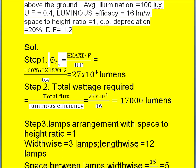First, calculate the total flux: illumination into area of the room into depreciation factor divided by utilization factor. Illumination is 100 lux, length is 60 meters, width is 15 meters, depreciation factor is 1.2, divided by utilization factor 0.4. Then we get total lumens of 27 into 10 to the power 4 lumens.